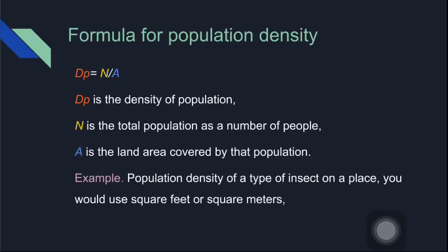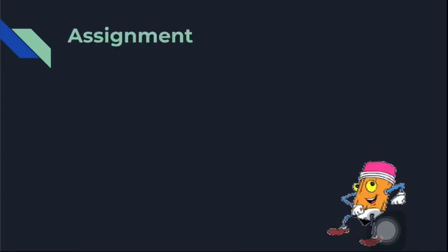For example, if you are looking at the population density of a type of insect on a tree, you would use square feet or square meters, because kilometers would be far too large. You might also use acres if you are looking at the population density of cattle on a ranch. The same population density formula applies to both human and non-human populations.